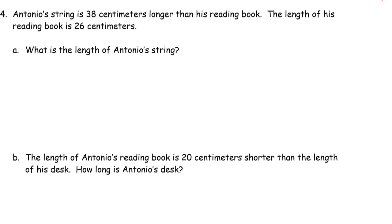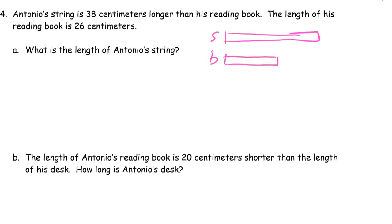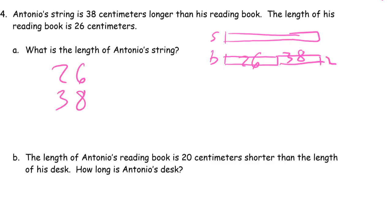Antonio's string is thirty-eight centimeters longer than his reading book. So he's got a string and a reading book, and his string is longer than his reading book. The book is twenty-six centimeters and the string is longer — it's thirty-eight more. The length of the string is twenty-six plus thirty-eight, so we're adding twenty-six plus thirty-eight.